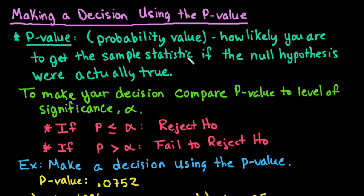After we find the p-value, and in this video I will not show you how to find the p-values I'm just going to talk about how to make the decision. To make your decision what you're going to do is you're going to compare your p-value to your level of significance alpha.